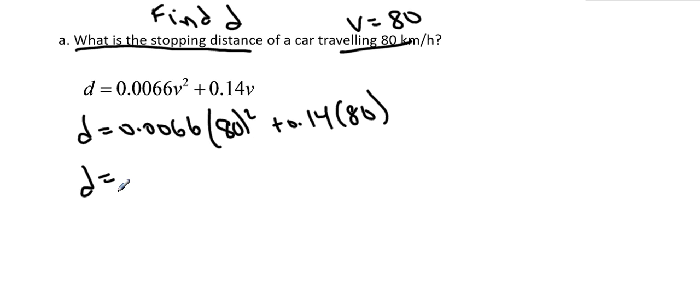And I get 53.44. So a car traveling at 80 kilometers per hour needs 53.4 meters to stop. That's just a good thing to think about. 53.4 meters is nothing to sneeze at, and 80 kilometers per hour is sort of highway speed if you're not on the 401. So 53 meters, anyway, there's the math. Let's look at part b.